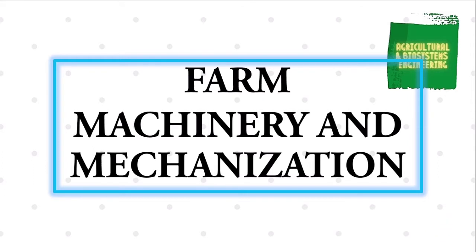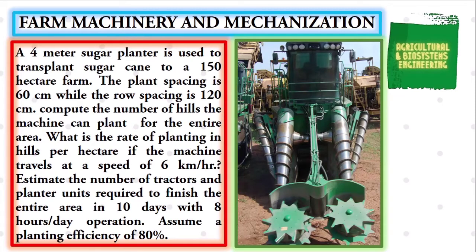This time, we will be solving this problem. A 4-meter sugar cane planter is used to transplant sugar cane to a 150-hectare farm. The plant spacing is 60 centimeters while the row spacing is 120 centimeters. Compute the number of hills the machine can plant for the entire area. What is the rate of planting in hills per hectare if the machine travels at a speed of 6 kilometers per hour? Estimate the number of tractors and planter units required to finish the entire area in 10 days with 8 hours per day operation.